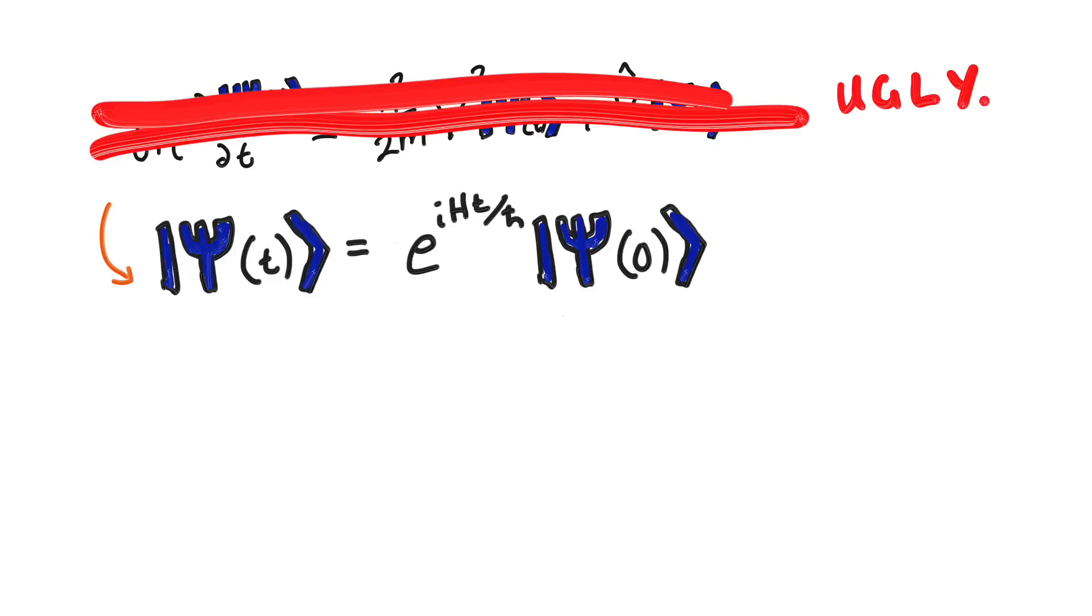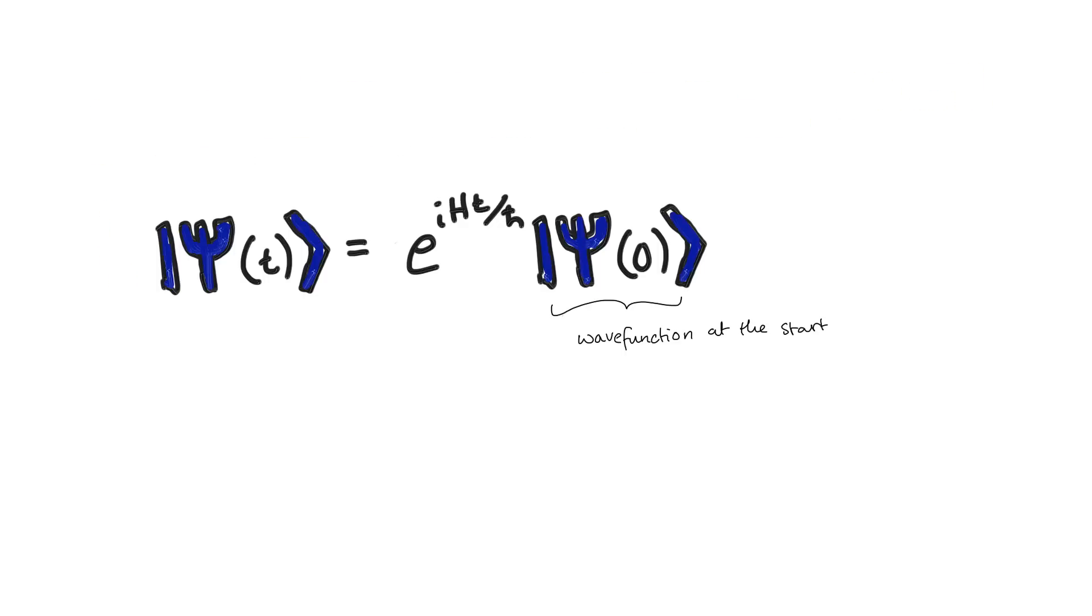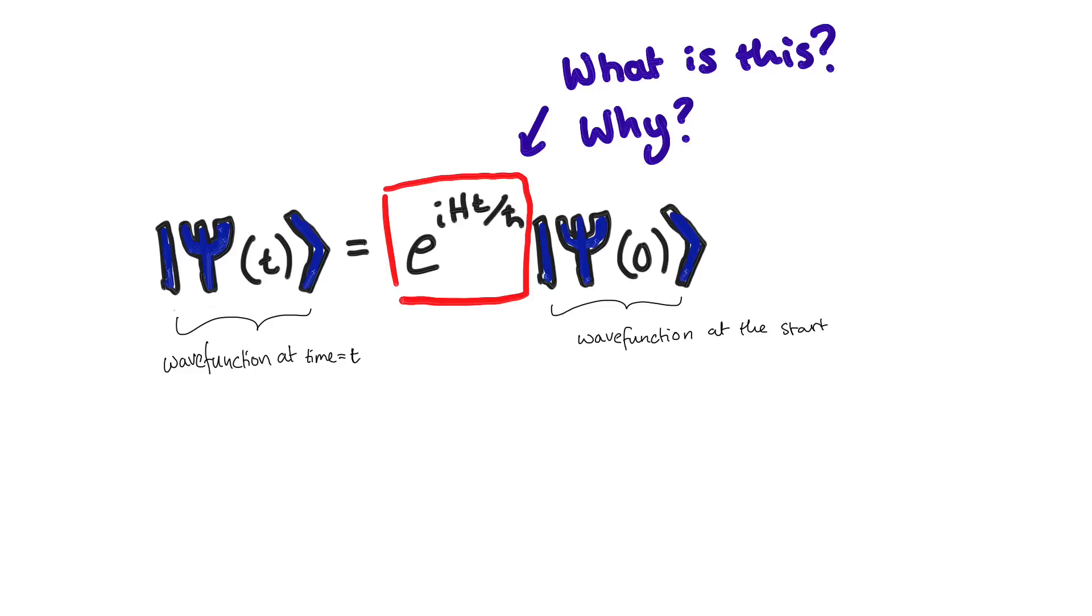Remember, the state of a quantum particle is given by the wave function. So if this is the wave function at the start, the Schrödinger equation tells you that this thing acts on it to produce the wave function t seconds into the future. Then the question is, what is this transformation and why is it that way?